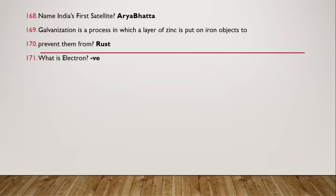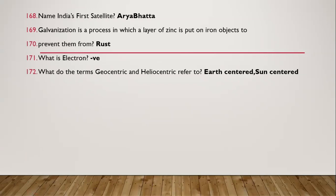Question 167: What is an electron? It has a negative charge. Question 168: What do the terms geocentric and heliocentric refer to? Geocentric means Earth-centered and heliocentric means Sun-centered.